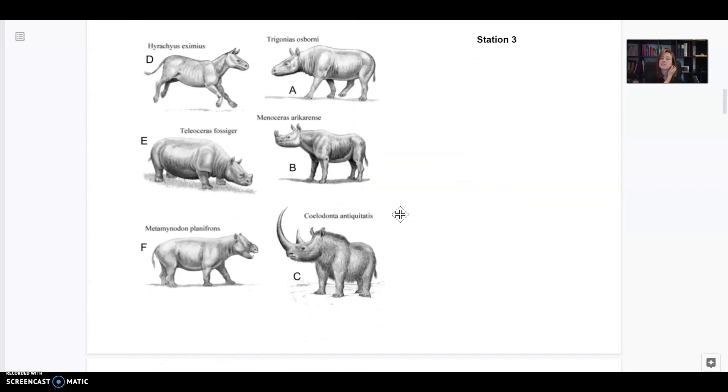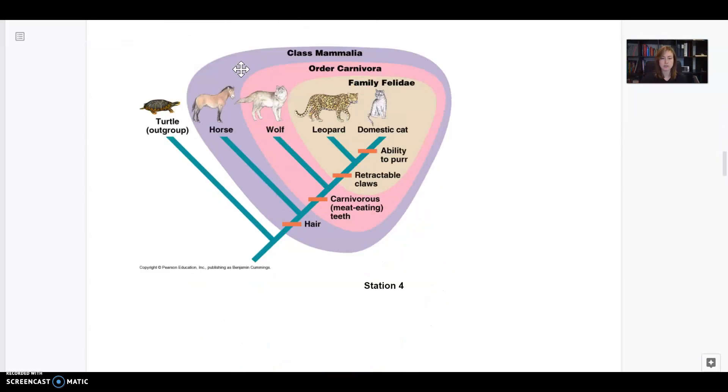This station is showing you evidence of evolution because it shows you the ancestors of modern rhinos. You can see all these ancestors, they kind of look like the modern rhino but they have some differences like this one's got some longer limbs and it doesn't have the horn on its nose quite yet. This shows us what rhinos used to look like and then today they look different because of evolution.